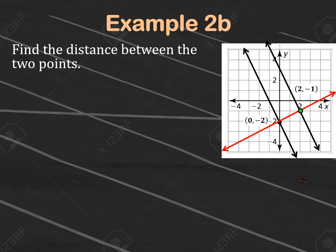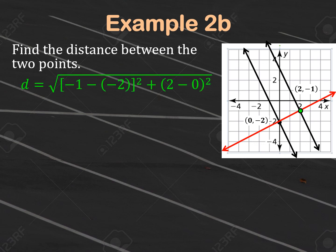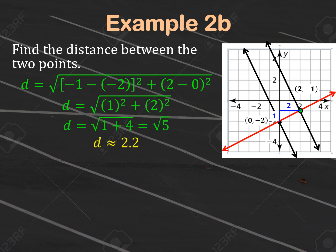Finally, find the distance between (0, −2) and (2, −1) using the distance formula. Building a right triangle, the width is 2 and the height is 1. So the distance = √(1² + 2²) = √5 ≈ 2.2. To summarize finding the distance between two parallel lines: find the equation of the perpendicular line by taking the negative reciprocal of the slope and using one of the y-intercepts; find the point where the perpendicular line intersects the other parallel line; then find the distance between those two points.